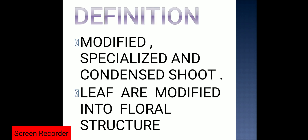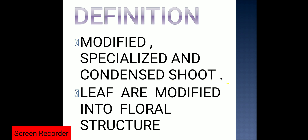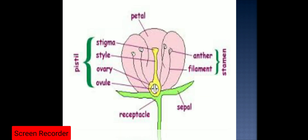The flower is the modified, specialized, and condensed shoot because the leaf is a part of the shoot system. That is why the flower is the modified, specialized, and condensed shoot where the leaves are modified into floral structures. These two are the key points for the definition of a flower.